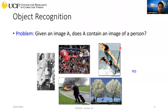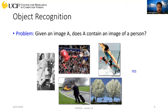So object recognition: given an image, you have to predict whether a particular object is present in that image or not. That's called object recognition, also called object classification. For example, if 'person' is one of the classes you're interested in, given five sample input images, you have to make a decision whether a person is present — it's just a simple yes or no answer.